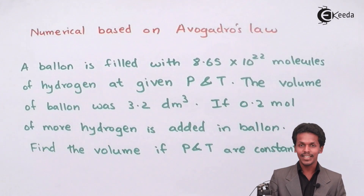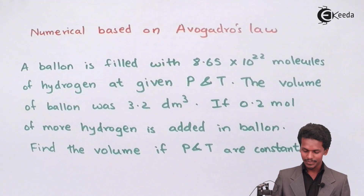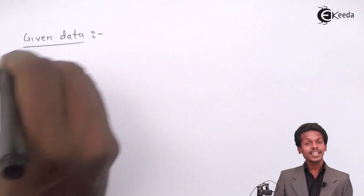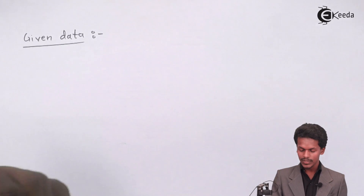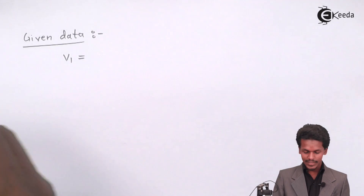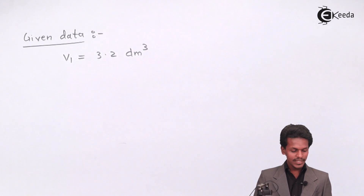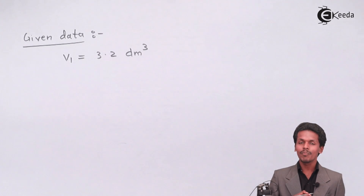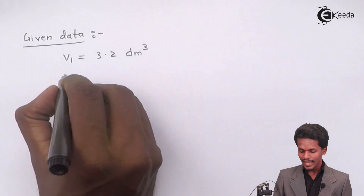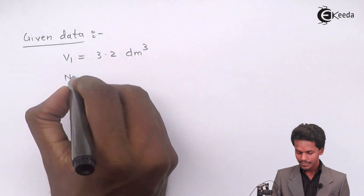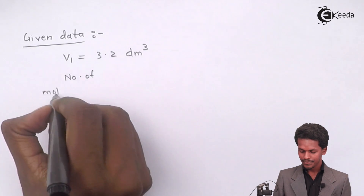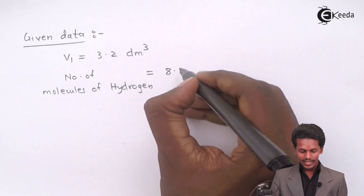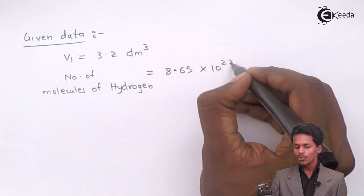The first thing we do is extract the data from the given question. The initial volume, V1, was given as 3.2 dm³. For the number of moles, they have not represented moles directly — they have given the number of particles of hydrogen gas, capital N, which is 8.65 × 10²² molecules of hydrogen gas.